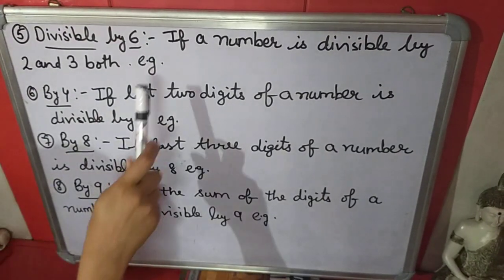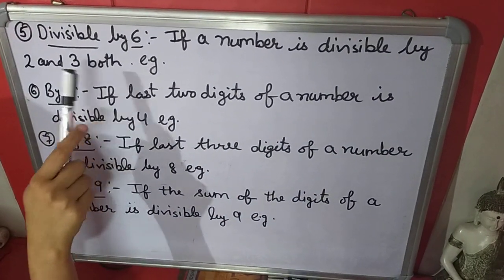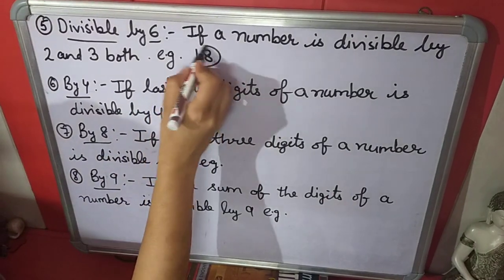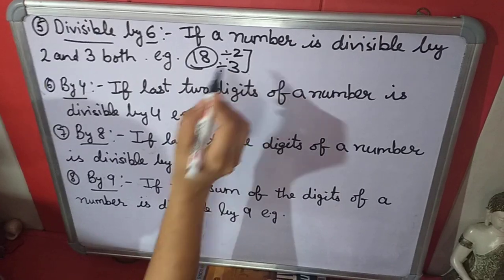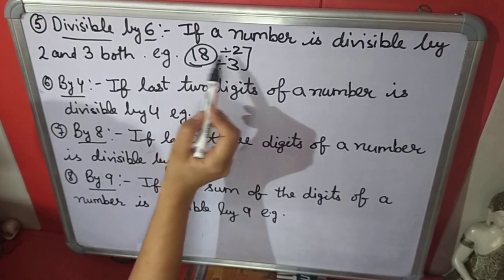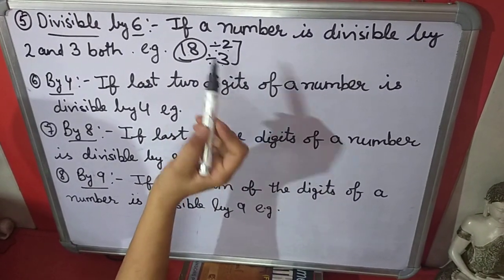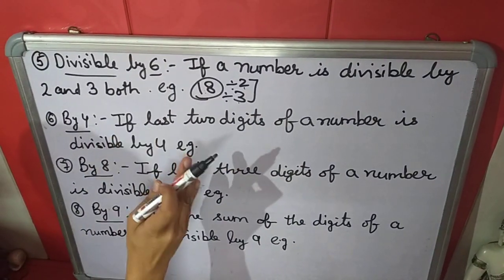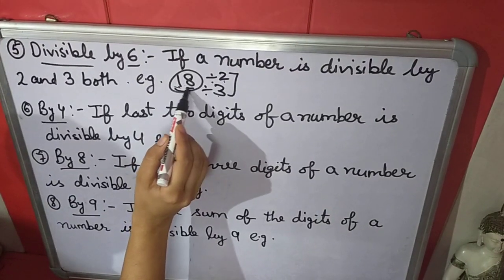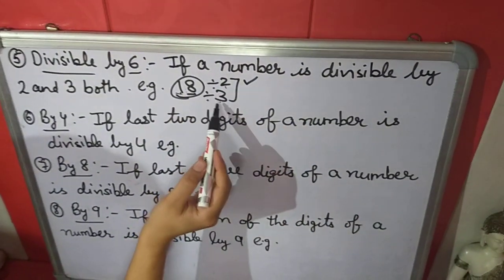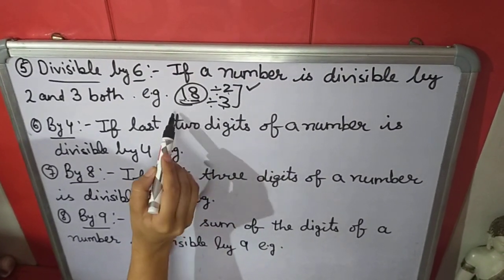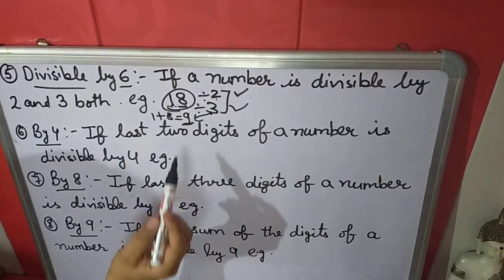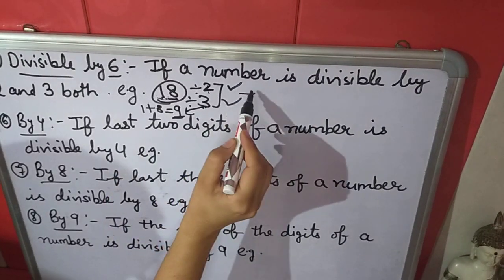The 5th rule is divisibility by 6. If a number is divisible by both 2 and 3, then that number is also divisible by 6. Example: 18. We check — the 1's place is 8, so it is divisible by 2. We add the digits: 1 plus 8 equals 9, and 9 is divisible by 3. So 18 is divisible by both 2 and 3, which means 18 is also divisible by 6.